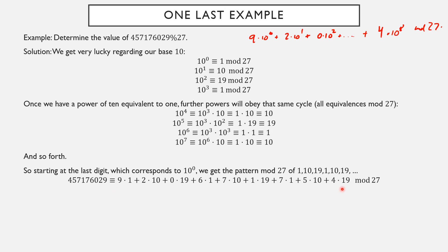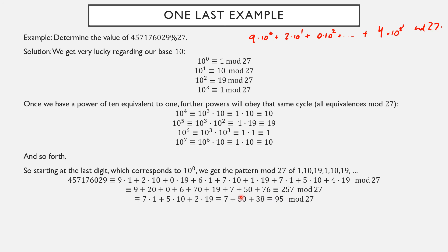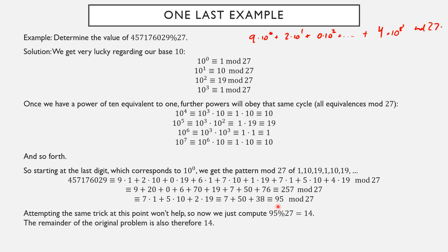After applying the pattern, we get 257. So modulo 27, the original number is equivalent to 257. Applying the same trick to 257 with the pattern 1, 10, 19 gives: 7×1 + 5×10 + 2×19 = 7 + 50 + 38 = 95. Attempting the trick again on 95 would just reproduce 95, so now we compute the remainder manually using the division algorithm and get 14. The remainder for the original problem is also 14.